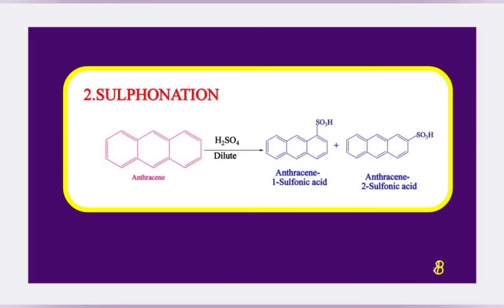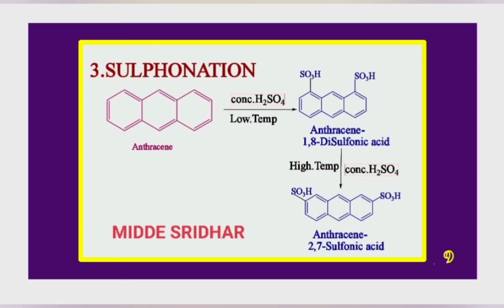When anthracene is reacted with dilute sulfuric acid, a mixture of anthracene-1-sulfonic acid and anthracene-2-sulfonic acid is obtained. When anthracene is reacted with concentrated sulfuric acid at low temperature, anthracene-1,8-disulfonic acid is obtained.